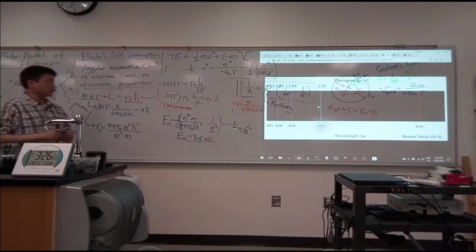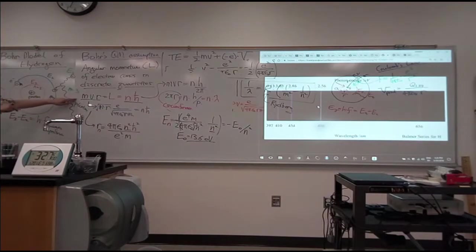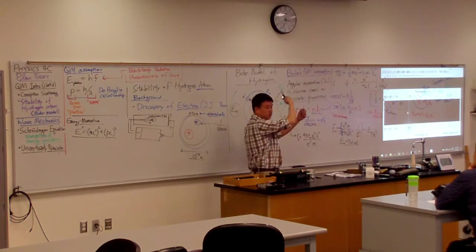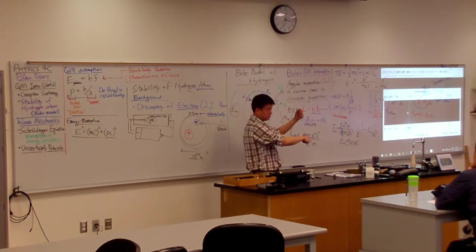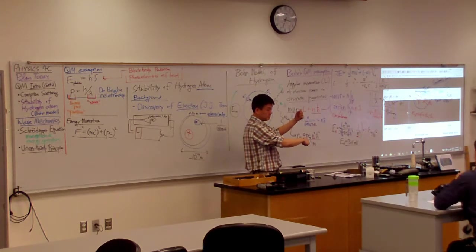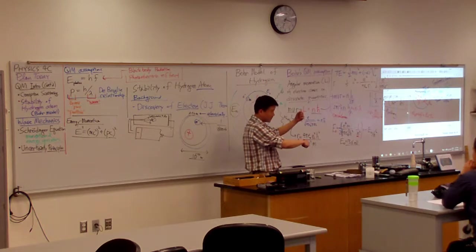So what Bohr's assumption is equivalent to is saying that as the electron goes in orbit, the wavelength of electron, whatever that means, fits in an integer number into the circumference. Yeah? So it's like a standing wave, right? It's like a standing wave.